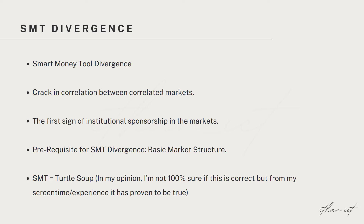This is significant because it tells us that there is some sort of institutional sponsorship going on in the markets. Before I dive any deeper into SMT Divergence, the prerequisite to spot SMT Divergence is to understand basic market structure. So if you don't know much about market structure, make sure that you learn that first — higher highs, higher lows, lower lows, and lower highs. When using SMT Divergence in the right context, you will be able to find trade ideas that immediately run in your favor, which is the main reason I love SMT Divergence and why it is such a crucial component of my model.